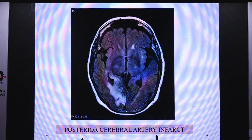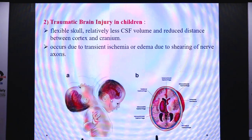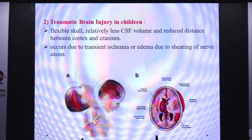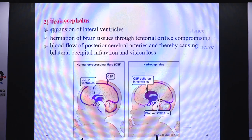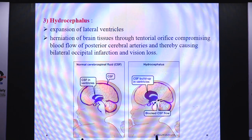An MRI scan showing a posterior cerebral artery infarct involving the occipital area illustrates term HIE. Traumatic brain injury is common in children because they have flexible skulls, relatively less CSF volume, and reduced distance between the cortex and cranium. It occurs due to transient ischemia or edema from shearing of nerve axons. In hydrocephalus, expansion of the lateral ventricles occurs and herniation of brain tissues through the tentorial orifice compromises blood flow of posterior cerebral arteries, causing bilateral occipital infarction and vision loss.